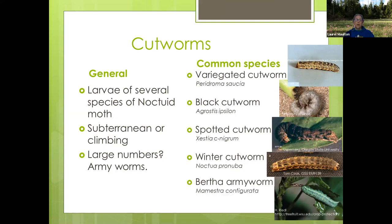So cutworms is our first critter we want to talk about. This is actually the most complicated of the three pests we're talking about tonight just because there are so many different kinds. Cutworms are all larvae of species of noctuid moths — medium-sized moths, gray to brown with different markings.